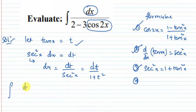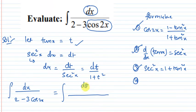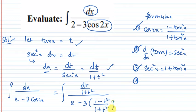The integral is: integral of dx divided by 2 minus 3 cos 2x. Substituting dx equals dt divided by 1 plus t squared, and cos 2x equals 1 minus t squared divided by 1 plus t squared, the denominator becomes 2 minus 3 times (1 minus t squared)/(1 plus t squared).